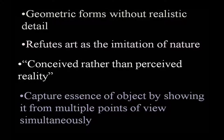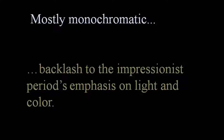In most Cubist paintings you see geometric forms dominating without the realistic detail. Cubist paintings repute art as the imitation of nature; it rather follows a certain concept of representation rather than following or imitating nature itself. In Cubist paintings, what you see is a conceived image of an idea or an object rather than a perceived reality. And Cubist paintings usually try to capture the essence of an object by showing it from multiple perspectives simultaneously instead of a single-point perspective. Interestingly, most Cubist paintings, at least in the early phase, are monochromatic.